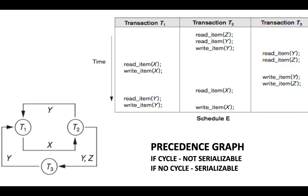In the next video we'll take another schedule and draw the precedence graph again. Using these two problems this should be clear. Remember: the number of nodes equals the number of transactions, edges are created from conflicting operations, and you identify whether there is a cycle. If the precedence graph has no cycle, the schedule is serializable. Thank you.